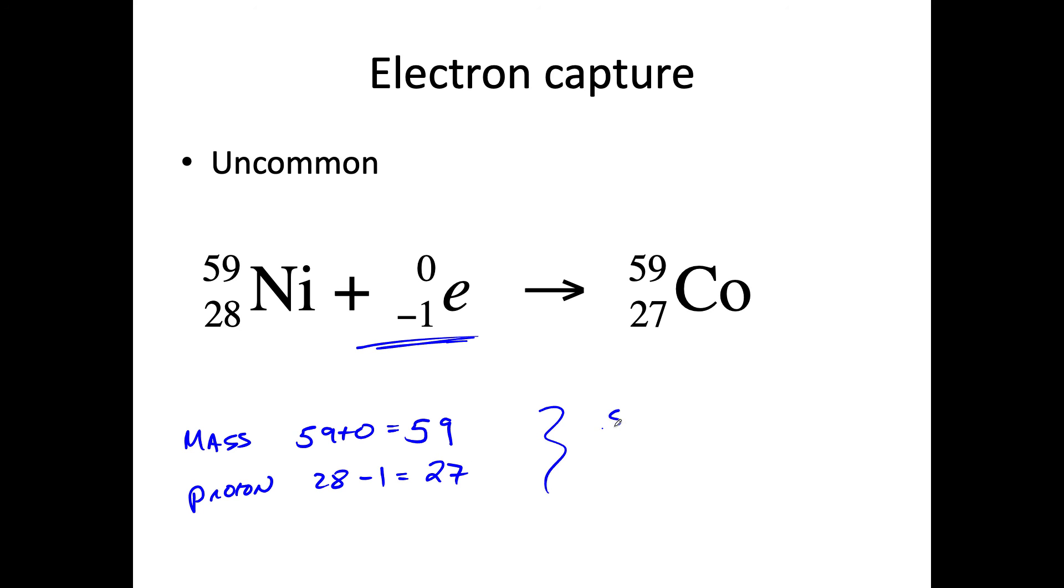So on the right, I have 59, which makes sense. And then I've got 27 for the number of protons. We're all balanced. Now what happens is that proton plus an electron gives me a neutron. This is what electron capture does.